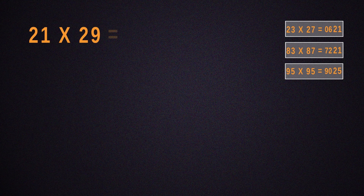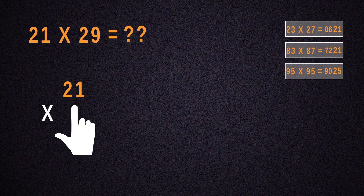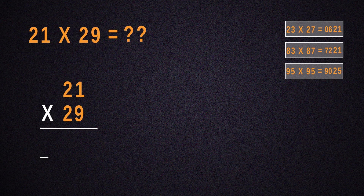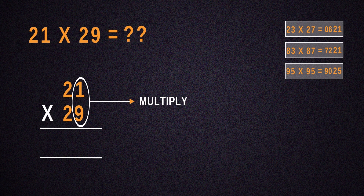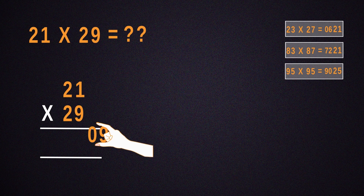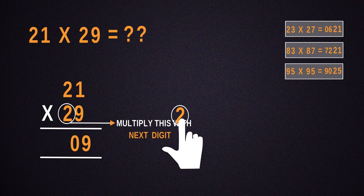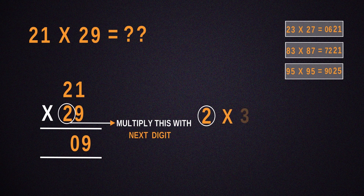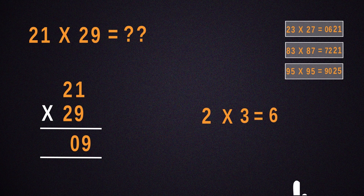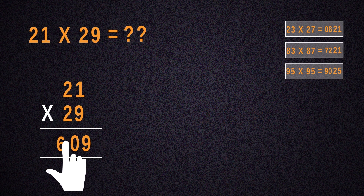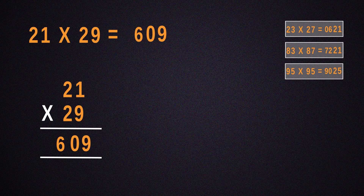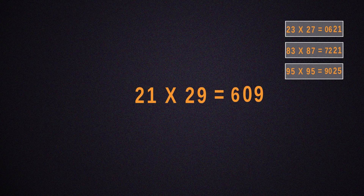Now, multiply 21 by 29. For that, the number obtained by multiplying 1 by 9 will be 09 and that should be put down. Then, multiply 2 with its next number, which is 3. Place the result next to 09 and we get 609 as our answer.